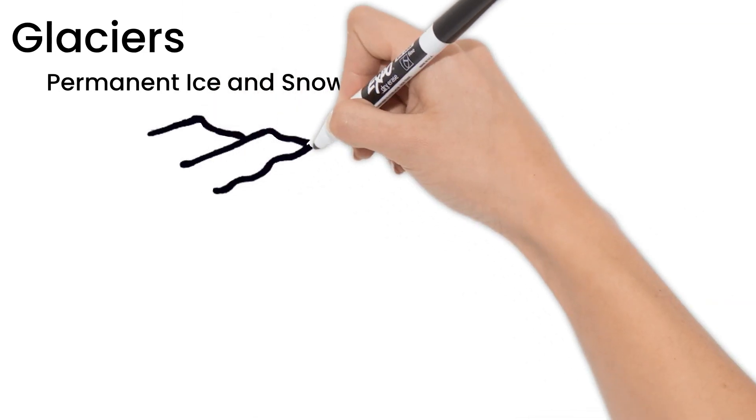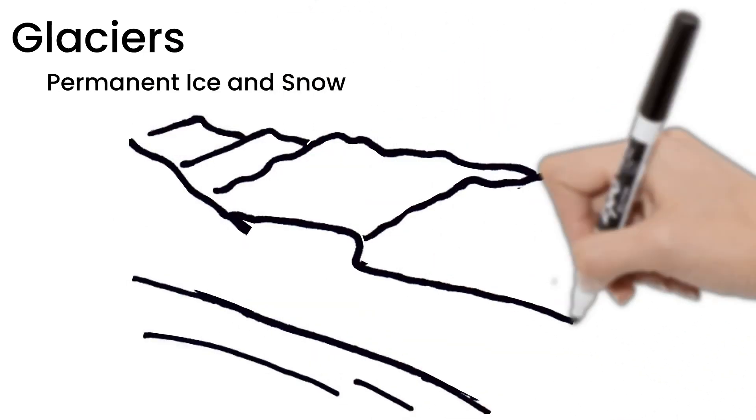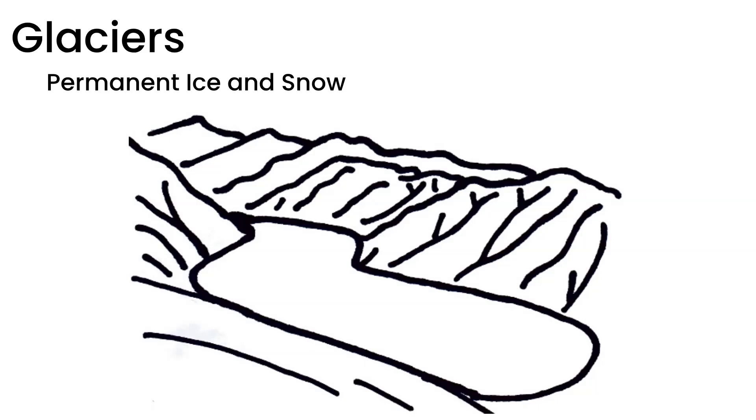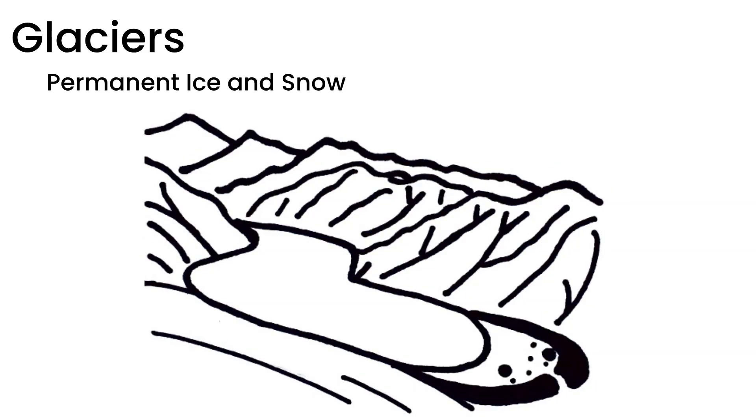Glaciers are areas of permanent ice and snow. Glaciers slide downward due to their weight and gravity. As they flow, glaciers carry sediment and rocks with them that are frozen within the ice. When glaciers melt, the rocks and sediment are dropped in a whole new area.